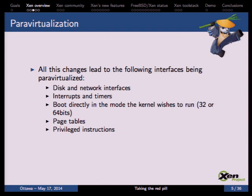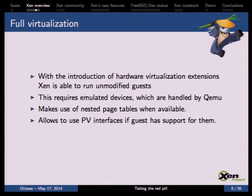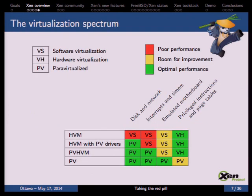Full virtualization was introduced to Xen when hardware virtualization extensions arrived to CPUs, allowing any kind of guest to run. To provide emulated devices for guests, we use QEMU, which is an open-source project. This also lets us make use of hardware virtualization extensions like EPT and the AMD equivalent. We also allow this kind of guest to use PV interfaces if they want better performance.